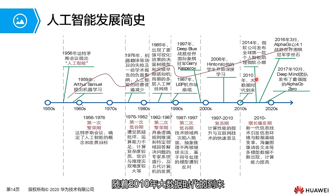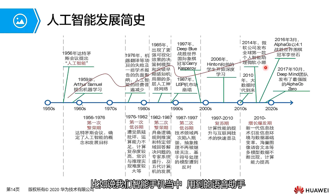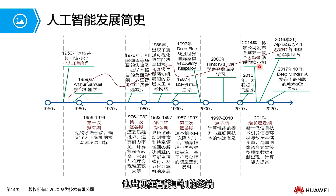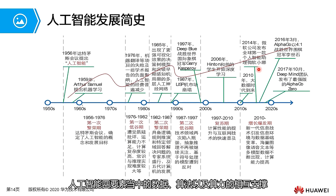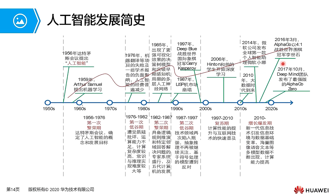With the arrival of the big data era, deep learning requires a very large amount of data supply. At this point, the volume of data could ensure that AI algorithms could be implemented and put into practice. Subsequent AI applications emerged — for example, voice assistants used in smartphones. More and more AI applications appeared in smartphone terminals. This demonstrates how data, algorithms, and computing power among the four elements of AI mutually support each other and are applied in practical scenarios.